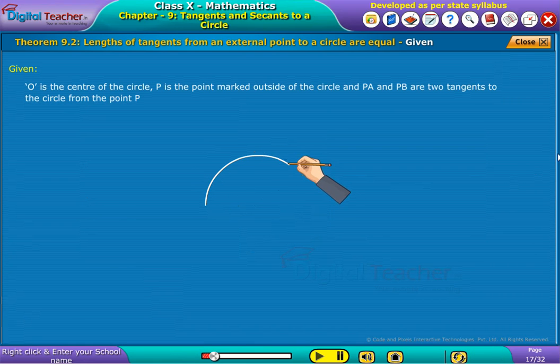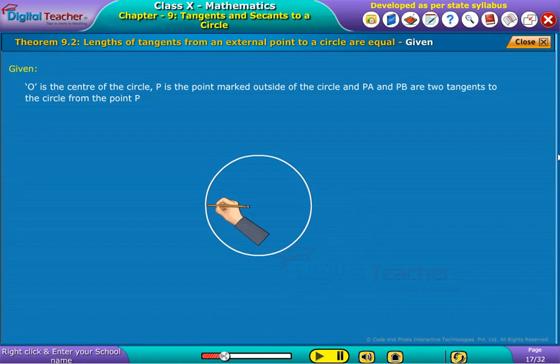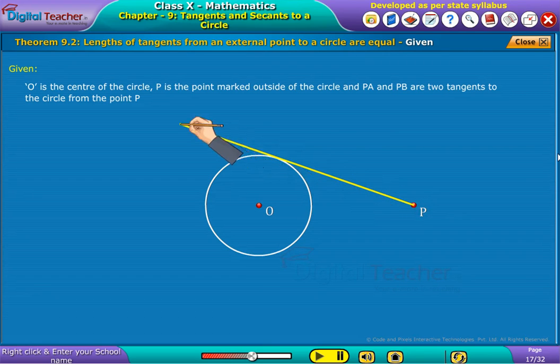Given that O is the center of the circle. P is the point marked outside of circle and PA and PB are two tangents to the circle from the point P.